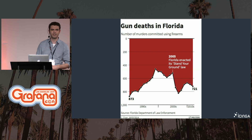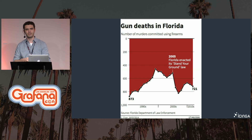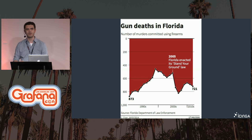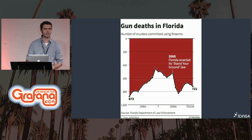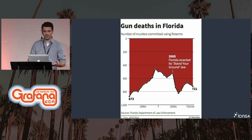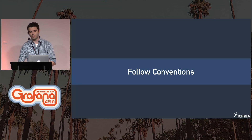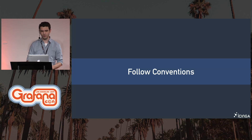But if you look closely, you can see on the left side that they just flipped the graph. It's technically correct, but it doesn't follow conventions. And by doing that, it makes us think that the murder rate dropped where it actually increased.